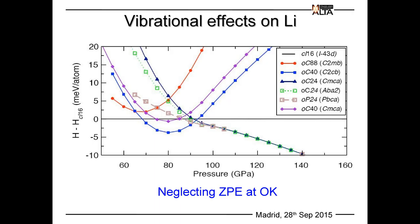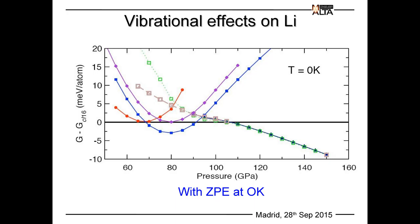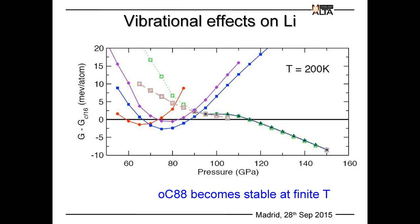Plotting relative enthalpy versus the CI16 phase: the OC88 phase is not stable at any pressure by enthalpy alone. However, at zero Kelvin the free energy approaches that of CI16, and at 200 Kelvin this phase appears as the most stable in that pressure range. Including dynamical effects thus contributes to the stabilization of this structure.